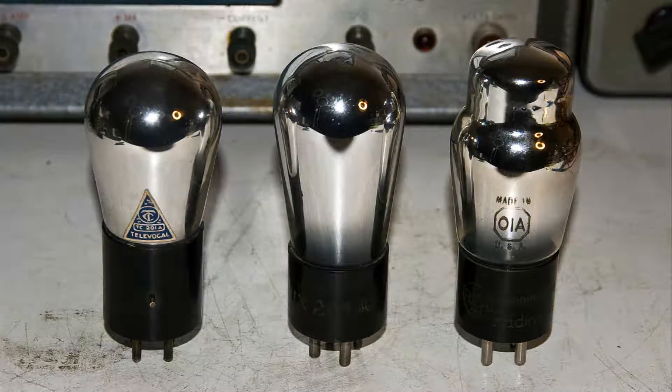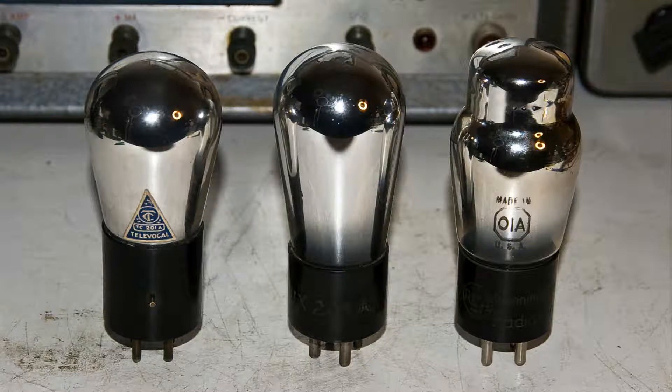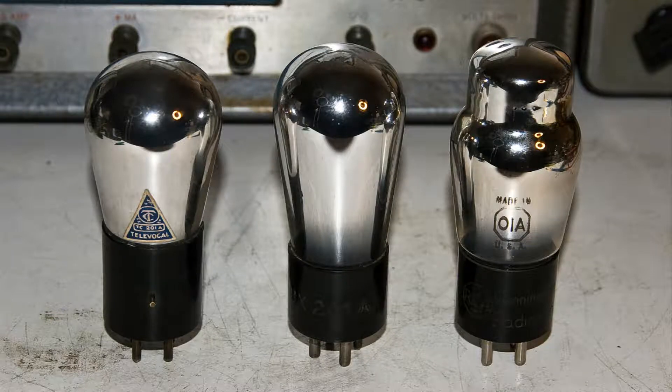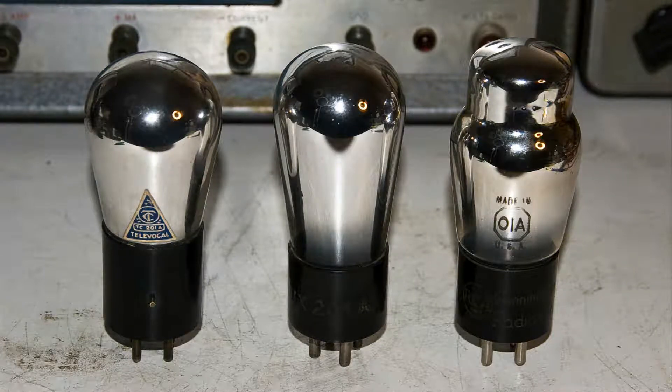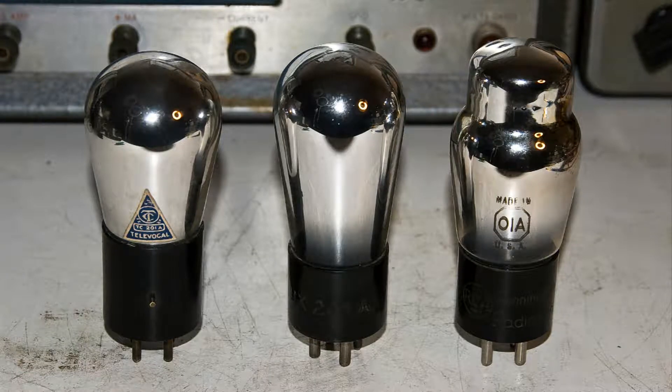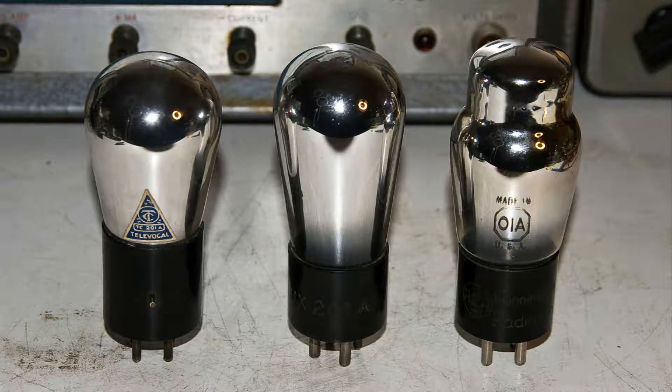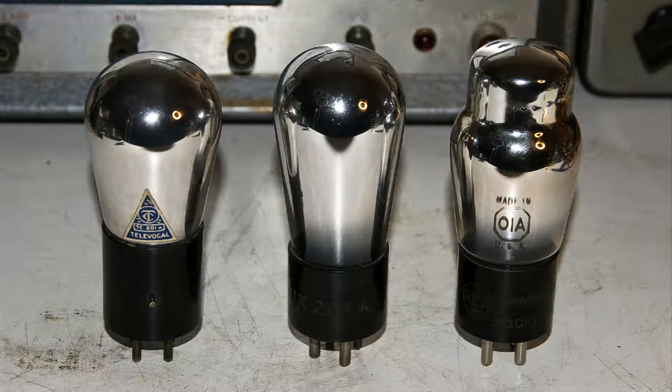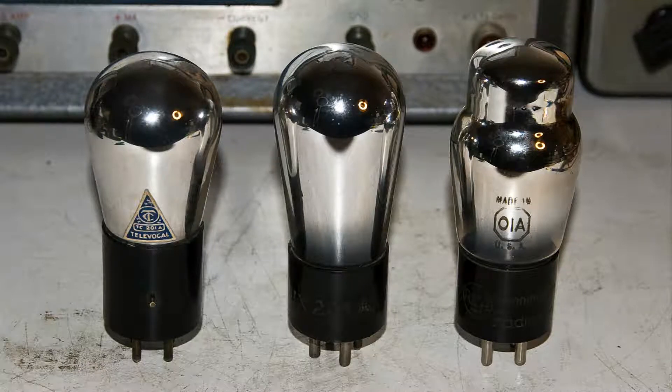In my last video on triode tubes, I demonstrated what happens when you put a positive voltage on the control grid and a negative voltage on the control grid. We used one of these O1A triode tubes from somewhere in the early to mid-20s.